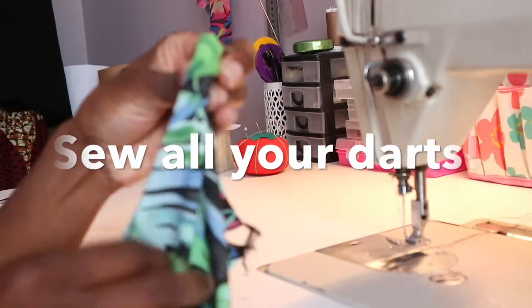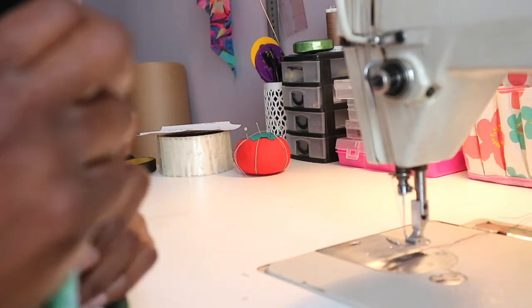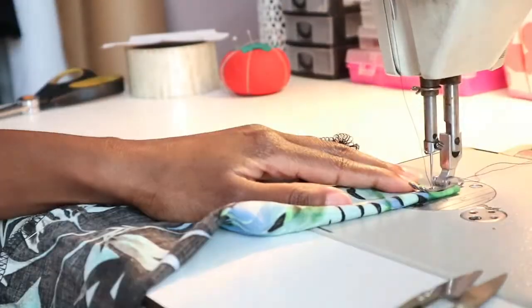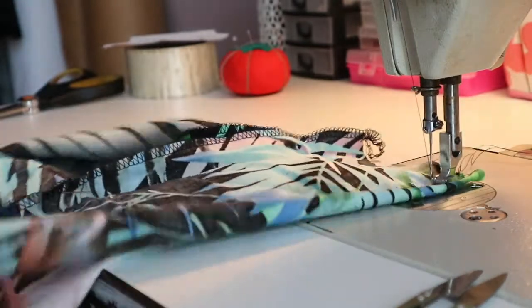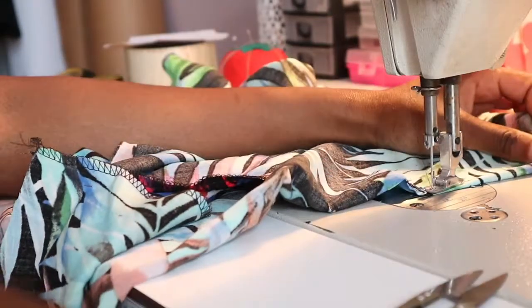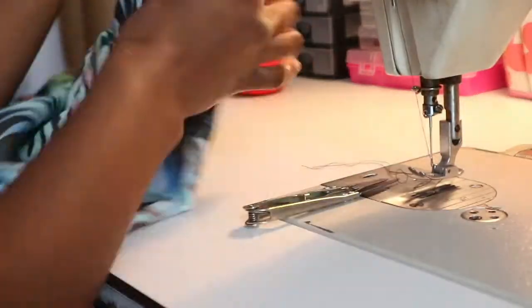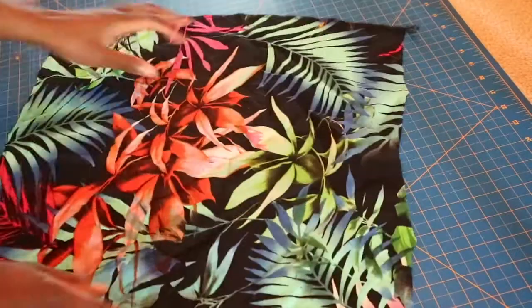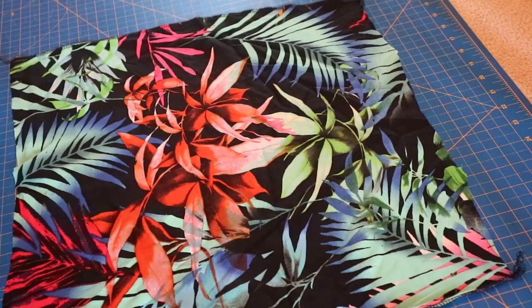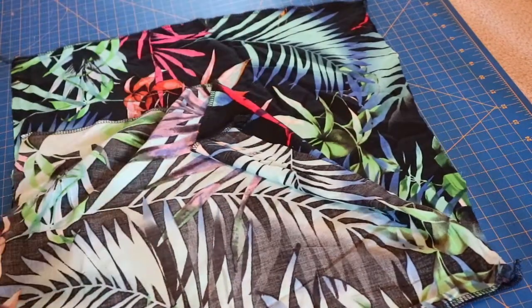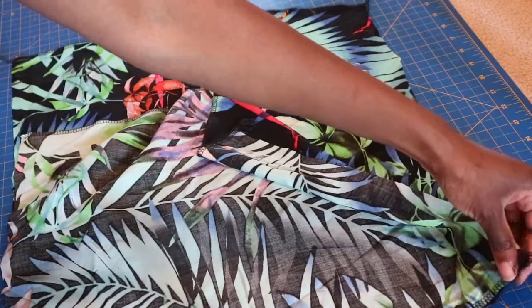Once I finish serging my side seams, I'm just going to sew my darts. This might not be relevant depending on what fabric you're using, but if you're using a fabric that requires darts, you should sew down your darts at this point. Now that my darts are sewn, I'm showing you guys how I laid my pieces and pinned them in place. Once I finish pinning that in place, I'm going to sew at a half-inch seam allowance when I bring it to the machine.